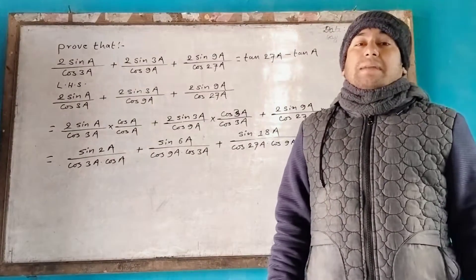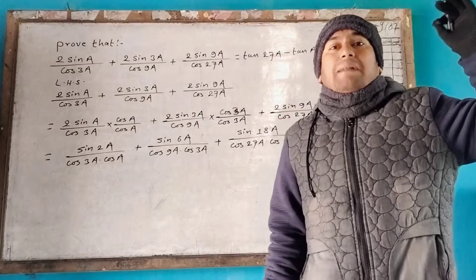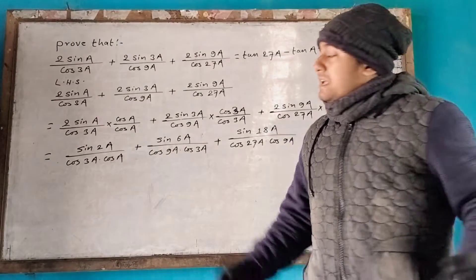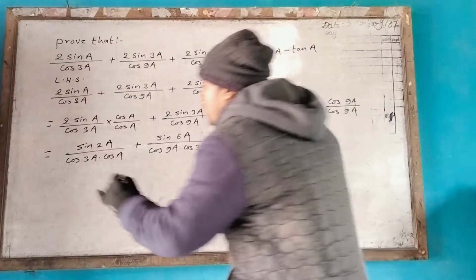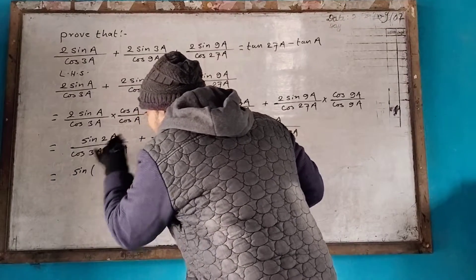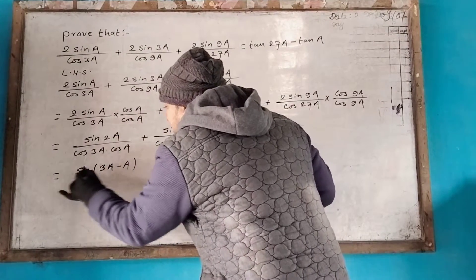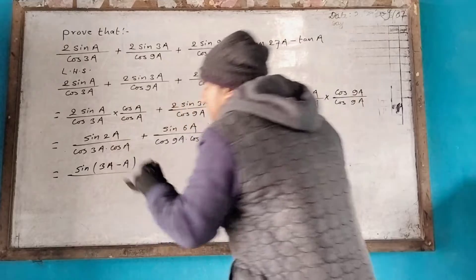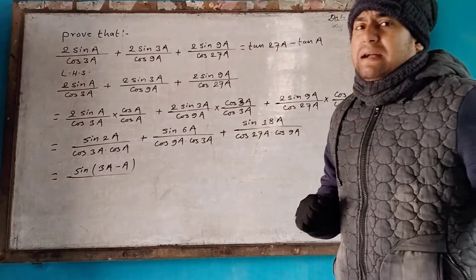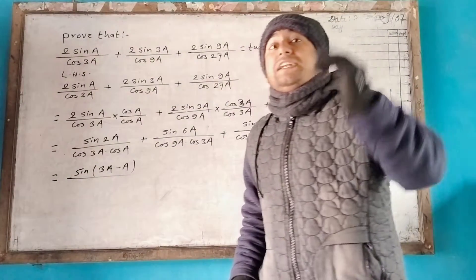3a extra, 2a minus 3a, two-a. What am I doing? 2a, 3a, which makes 3a minus 2a. We need to calculate the denominator — 3a — to change 3a into cos.